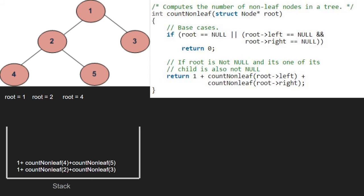Now, as 4 is a leaf node, we return 0 and finish execution for node 4.